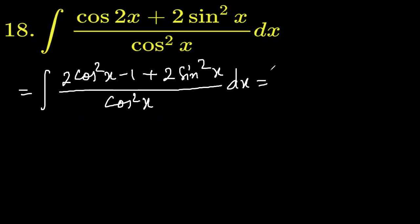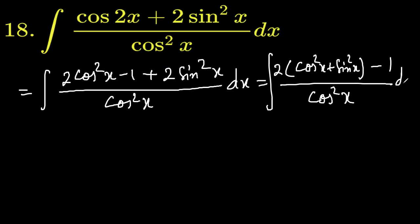Now we can take 2 common from the integration sign. 2 common and cos square x plus sine square x which is 1. Cos square x plus sine square x. So this is 1 and minus 1 divided by cos square x, cos square x dx.